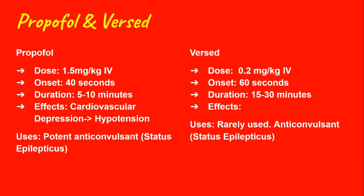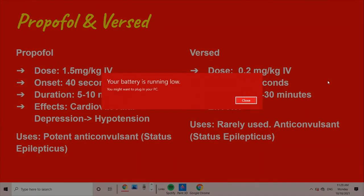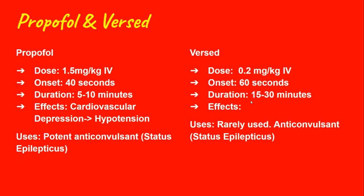Propofol dosing would be 1.5 mg/kg with an onset of approximately 40 seconds and a duration of up to 10 minutes. The main side effect is cardiovascular depression — as we've talked about in other videos, it can cause hypotension. It's a potent anticonvulsant, which is why it may be chosen for stable seizure patients. But if the patient is unstable, it's not going to be picked because it lowers blood pressure. Then there's Versed, which is also an anticonvulsant and may be chosen for that reason, but it also has hypotensive effects. The typical dose for Versed is 0.2 mg/kg with an onset of 60 seconds and a duration of up to 30 minutes. Propofol or Versed will definitely be used for post-intubation sedation.